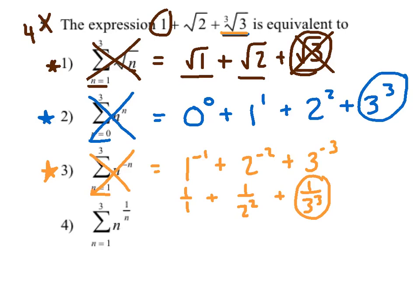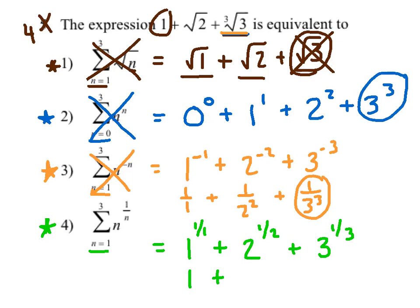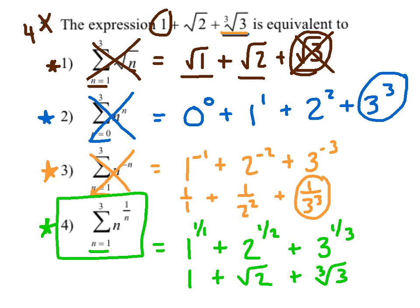It looks like we're leaning towards number four — let's confirm it works. Substituting n equals one gives one raised to the one-over-one power, then two raised to the one-half power, then three raised to the one-third power. Using our exponent rule: one raised to any power is one, two to the one-half is radical two, and three to the one-third is the cubed root of three. That's a perfect match — choice four is our answer.